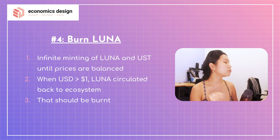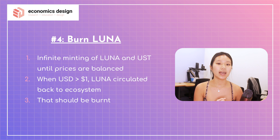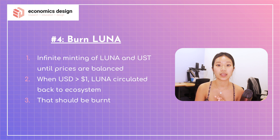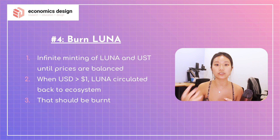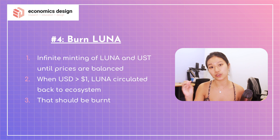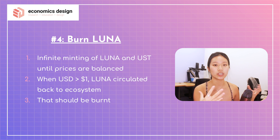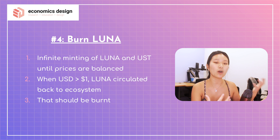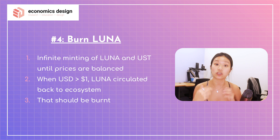Lastly, there is the burning of Luna. Right now, the supply of Luna and UST is elastic — you can burn and mint anytime. You're supposed to burn Luna to mint UST, but currently Luna is not burnt; it goes back into the ecosystem to be redistributed to Luna holders. A proposal from Do Kwon recommends burning Luna instead of keeping it in the treasury to redistribute. I absolutely agree, because when UST is above $1, Luna should be burnt rather than circulated back into the system. This helps maintain a positive feedback loop and reduce the negative impact on the ecosystem.